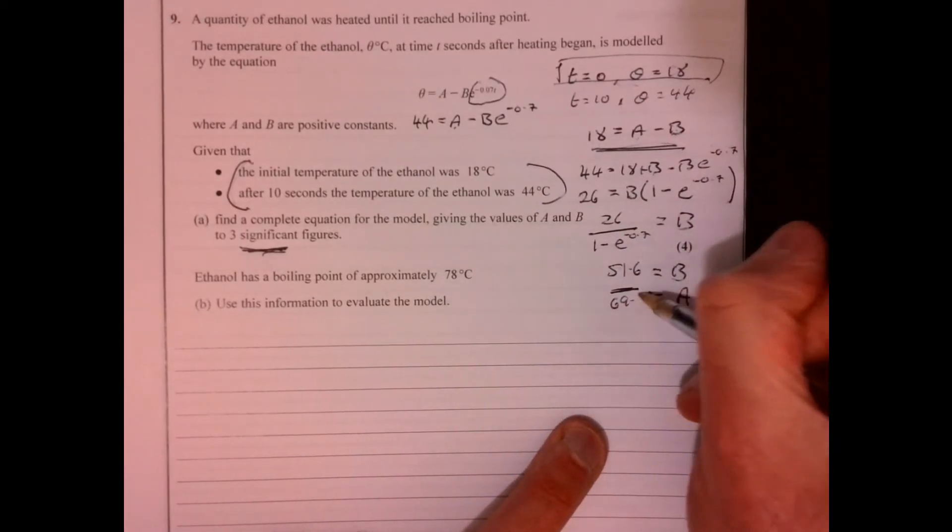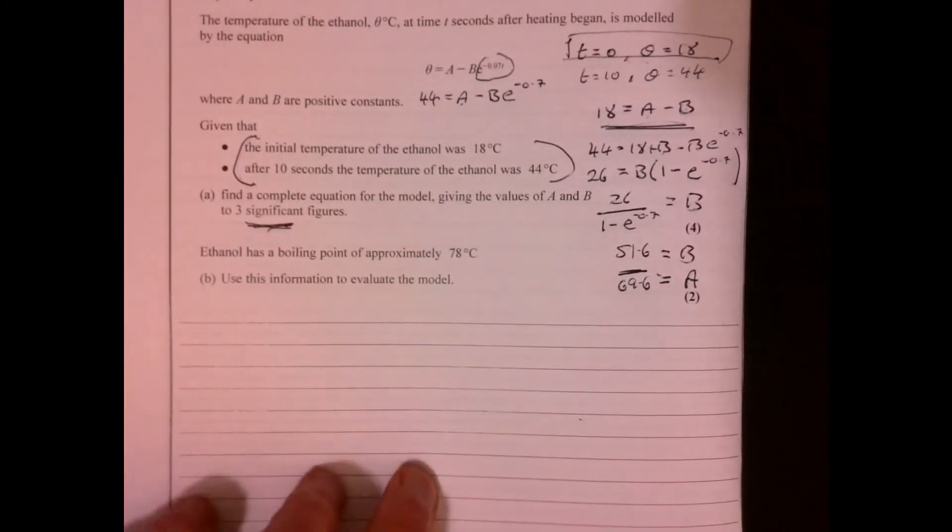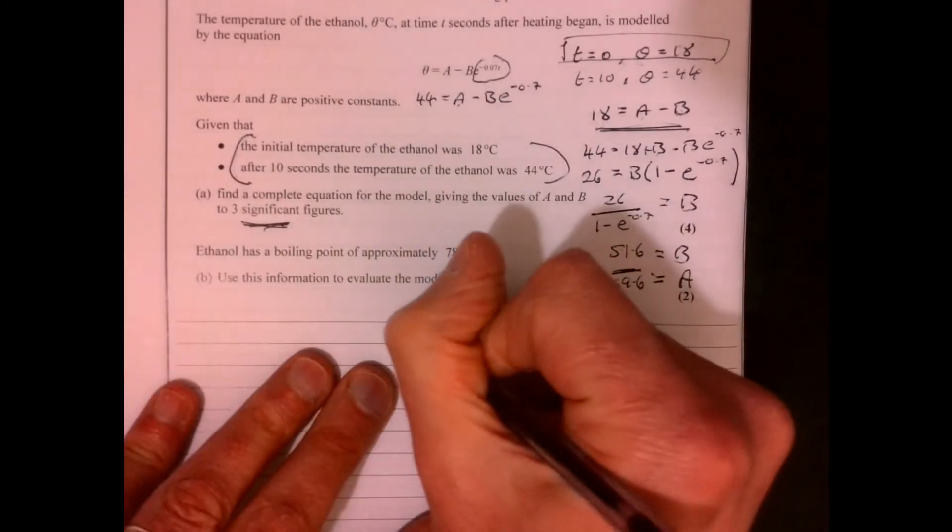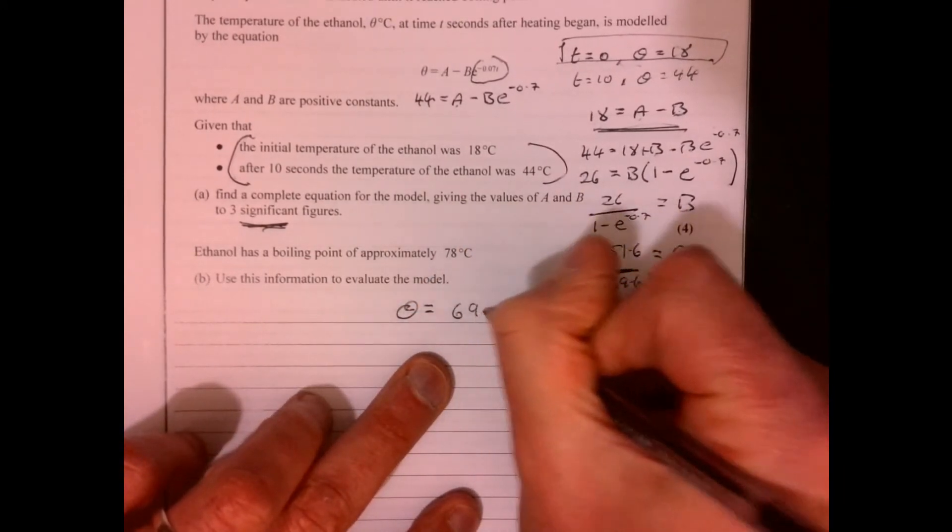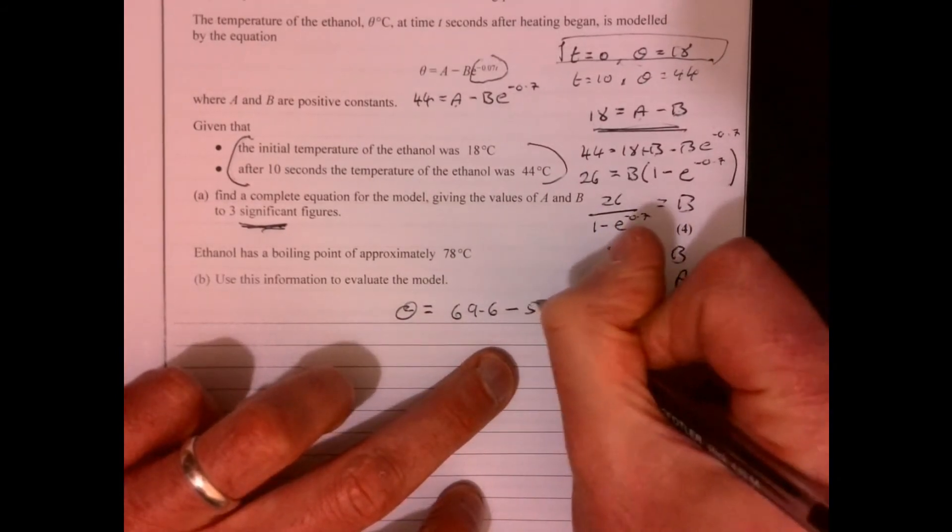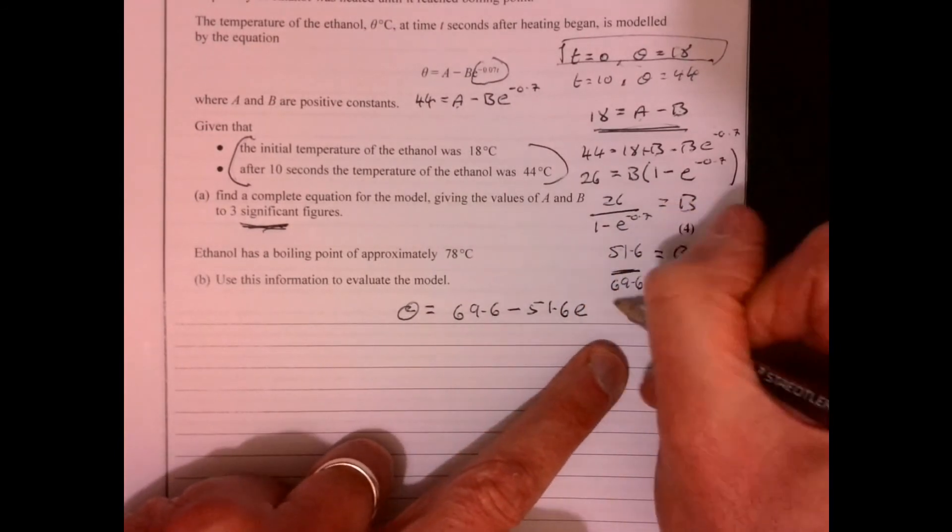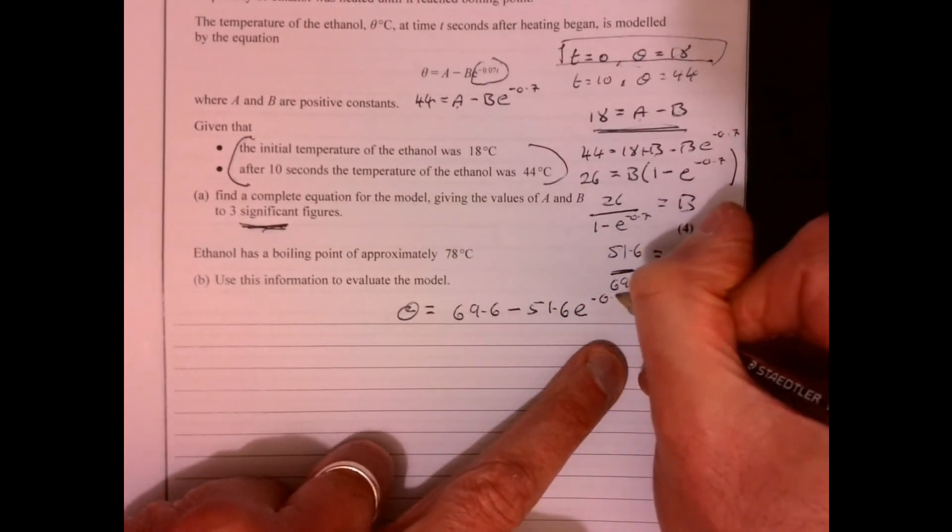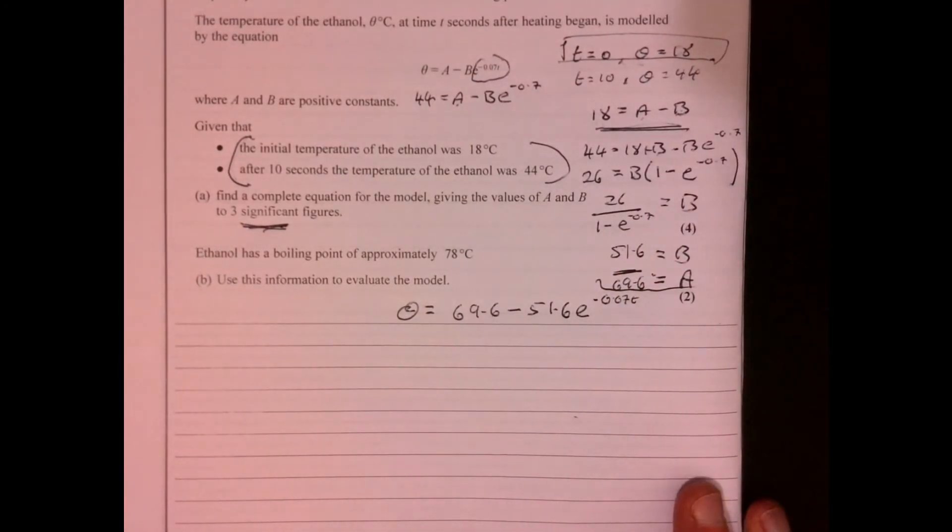So if we just piece everything together, what have we actually got here? So it equals 69.6, take away 51.6, E to the minus 0.7 T. There we go.